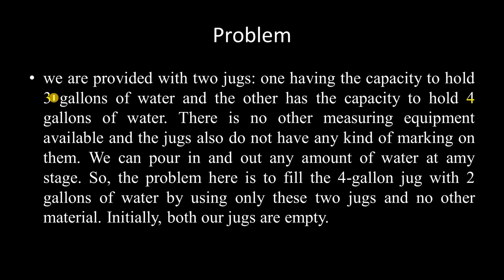Gallon is a capacity measurement, like liters or something similar. One jar can hold 3 gallons of water and another one can hold 4 gallons of water. There is no other measuring equipment available and the jugs do not have any kind of marking on them. The problem is that we have to fill the 4-gallon jug with exactly 2 gallons of water.